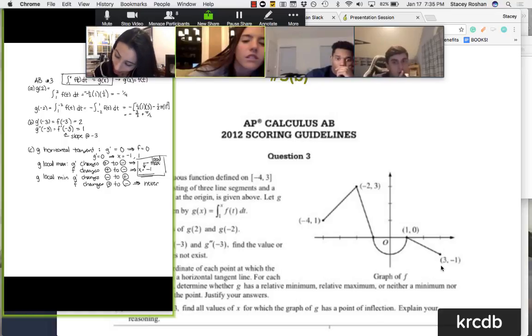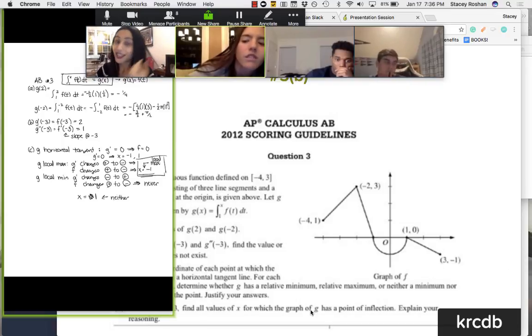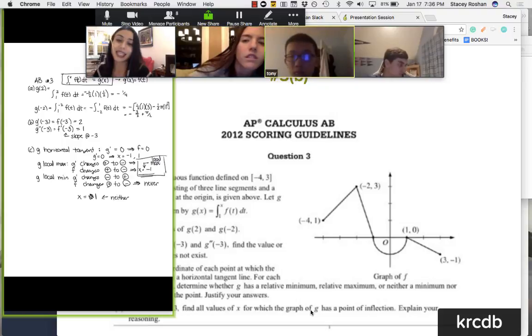And at X equals 0, I'm sorry, X equals 1, that one is neither. You see how that's part of the question? It says that it can be neither. Yeah, so a little bit tricky.